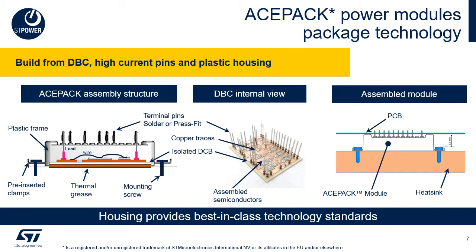Let's take a look at how these ASPEC power modules are built. The essential structure shown on the left hand side of this slide is a direct bonded copper substrate, DBC, at the bottom with the semiconductor dies. The DBC is connected with the high current terminal pins then encased in a rugged plastic frame. In the center picture you see the DBC showing the mounted semiconductor dies and terminal pins. Inside the module, connections are done by bond wires or traces. The DBC isolates the silicon dies from the operating environment while still providing excellent thermal conductivity for heat dissipation. Each single power pin is specified at a resistance of less than 4 milliohm.